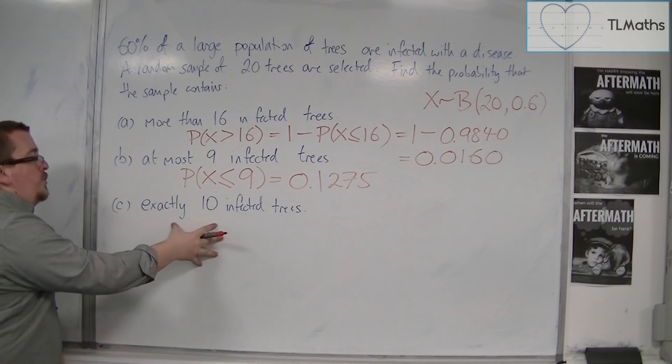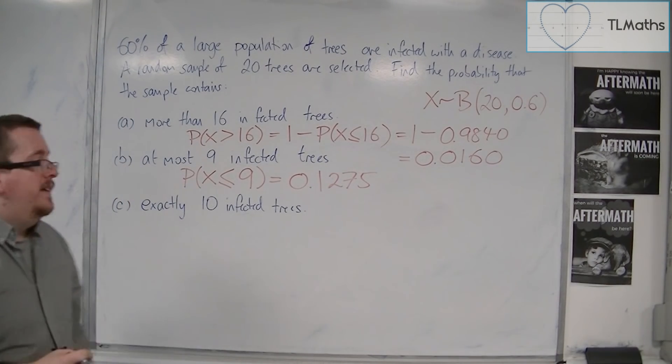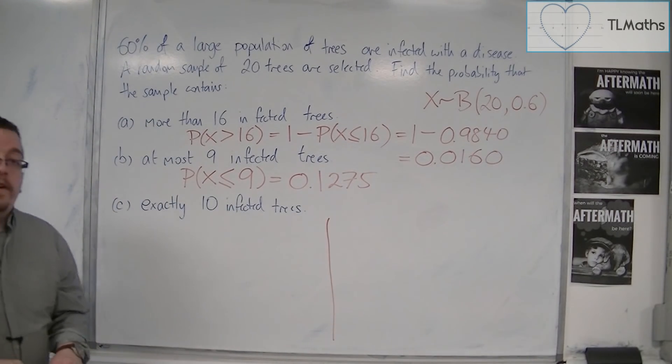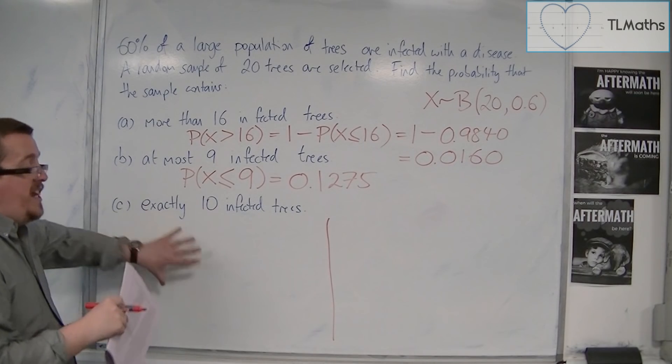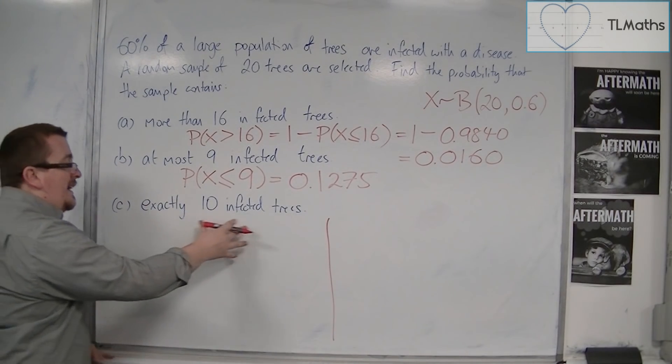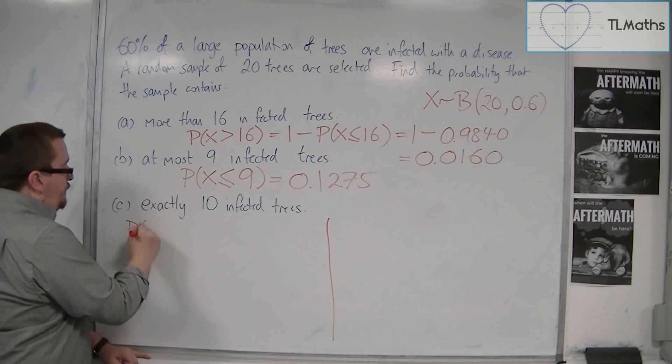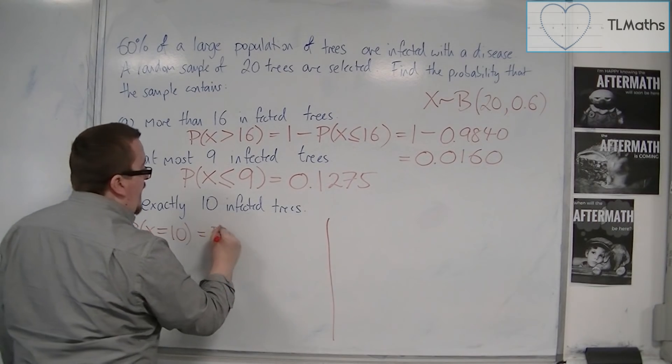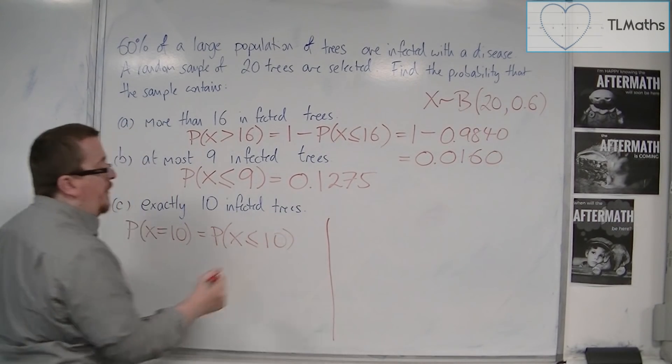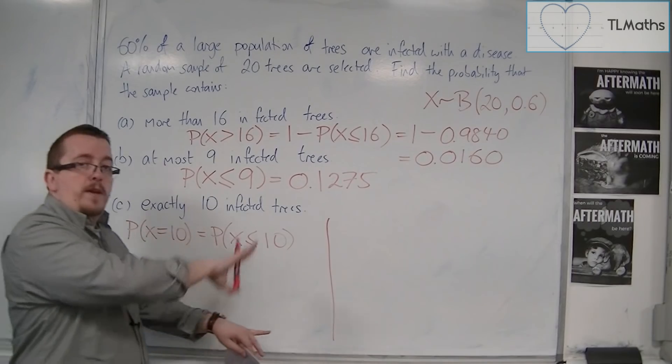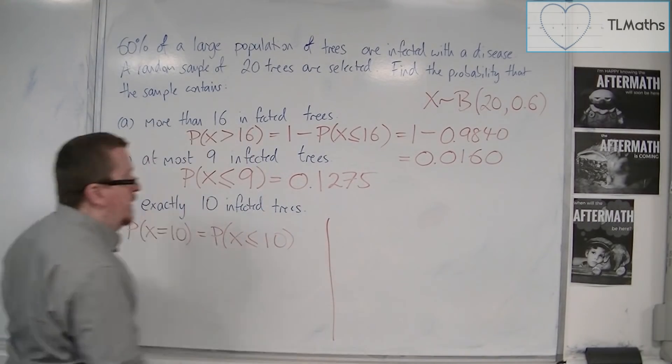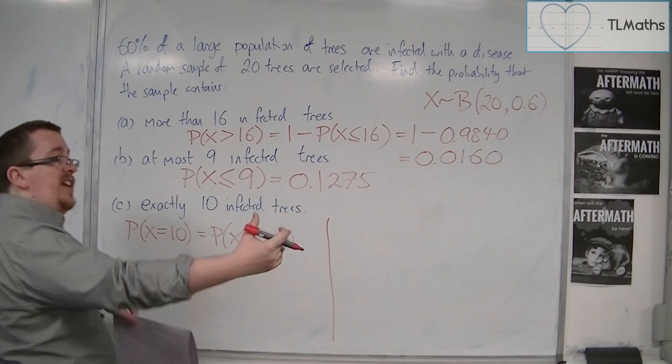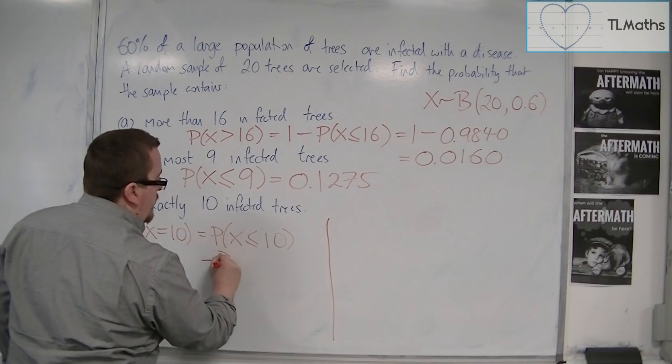Now, the final question here is exactly 10 infected trees. I'm going to show you two ways to do this. You could do the tables approach. So exactly 10 is the same as me looking at the probability of X being less than or equal to 10. So that's 0, 1, 2, 3, 4, 5, 6, 7, 8, 9, and 10. And I don't want all of those. I just want that 1 on the end.